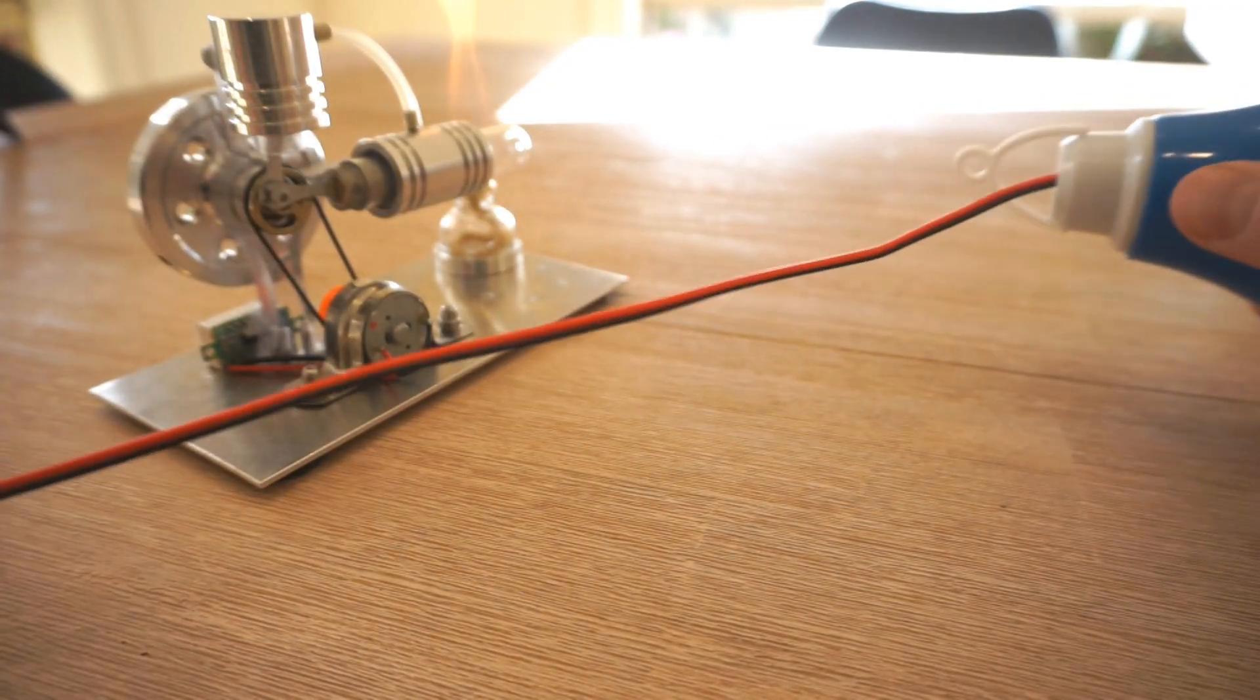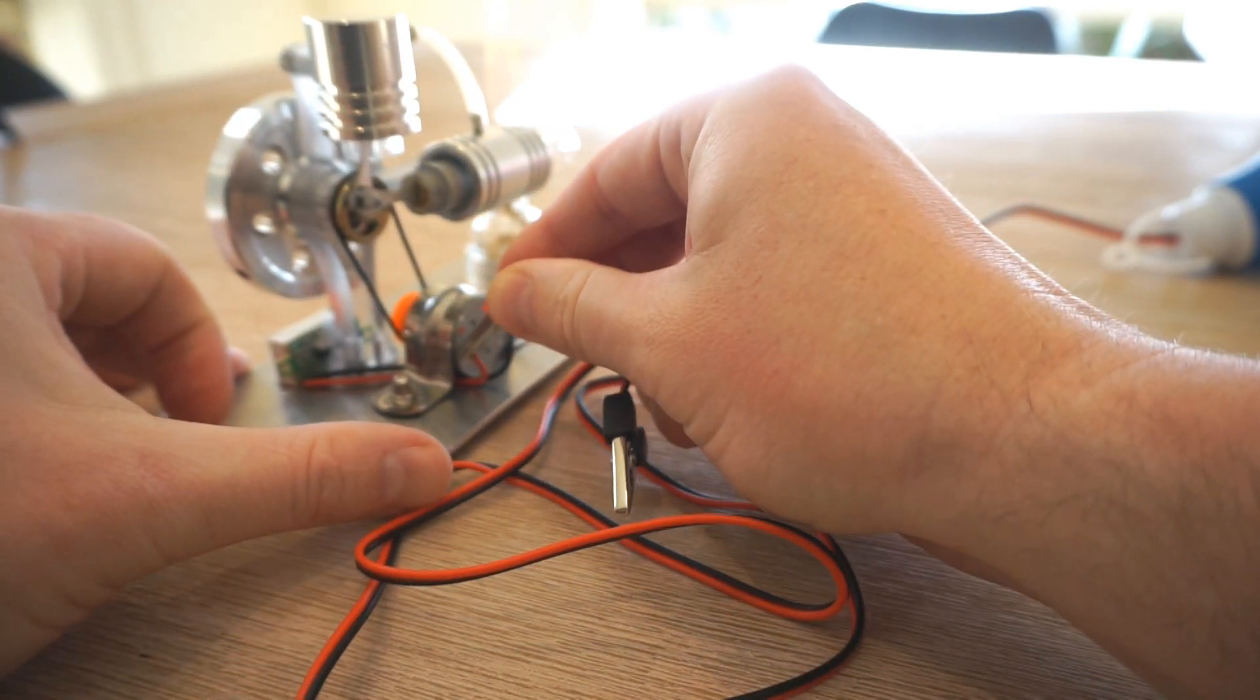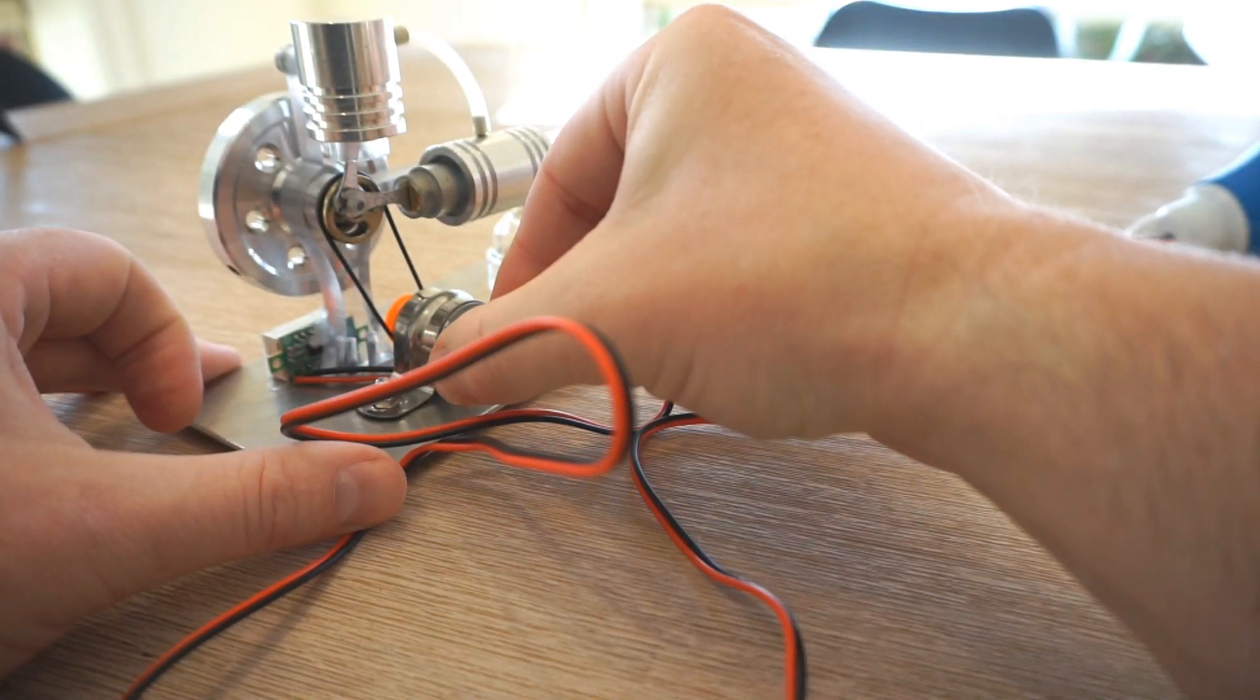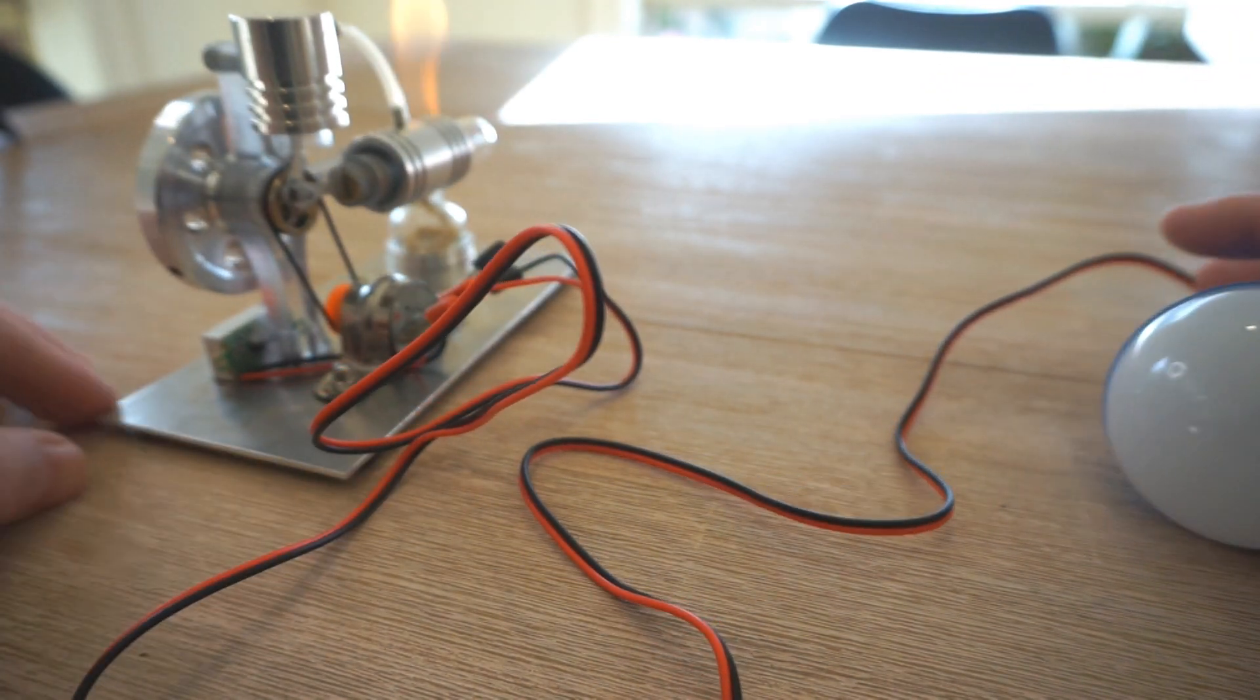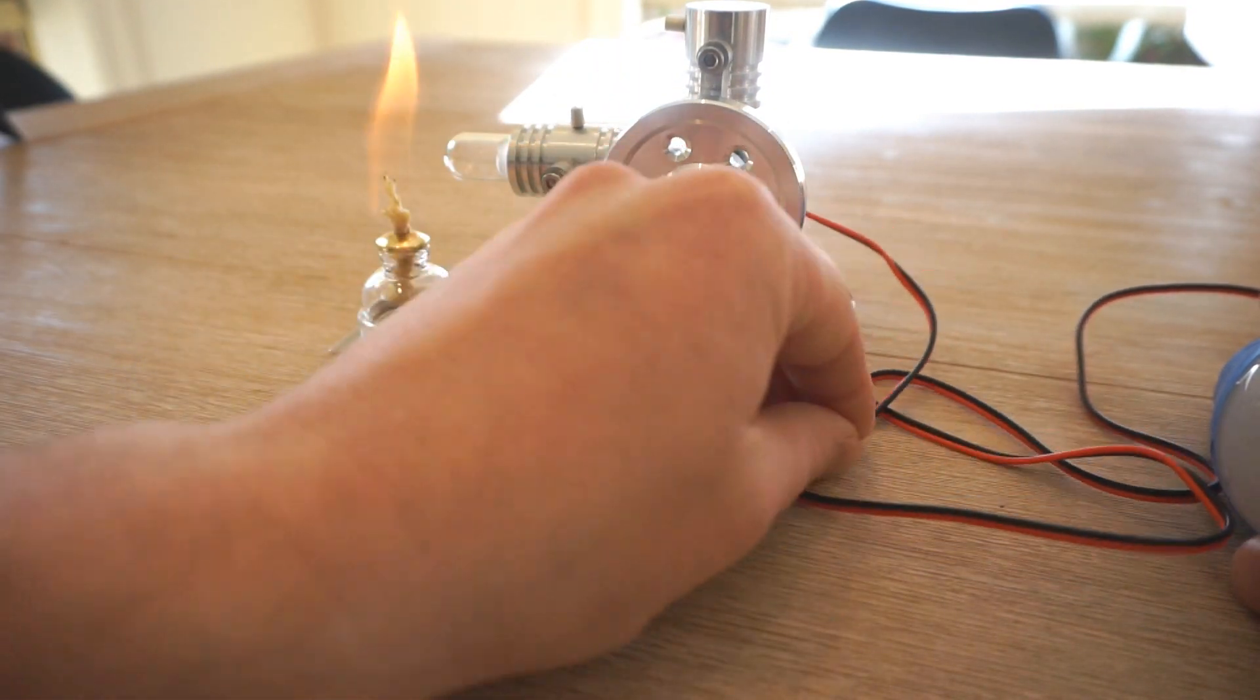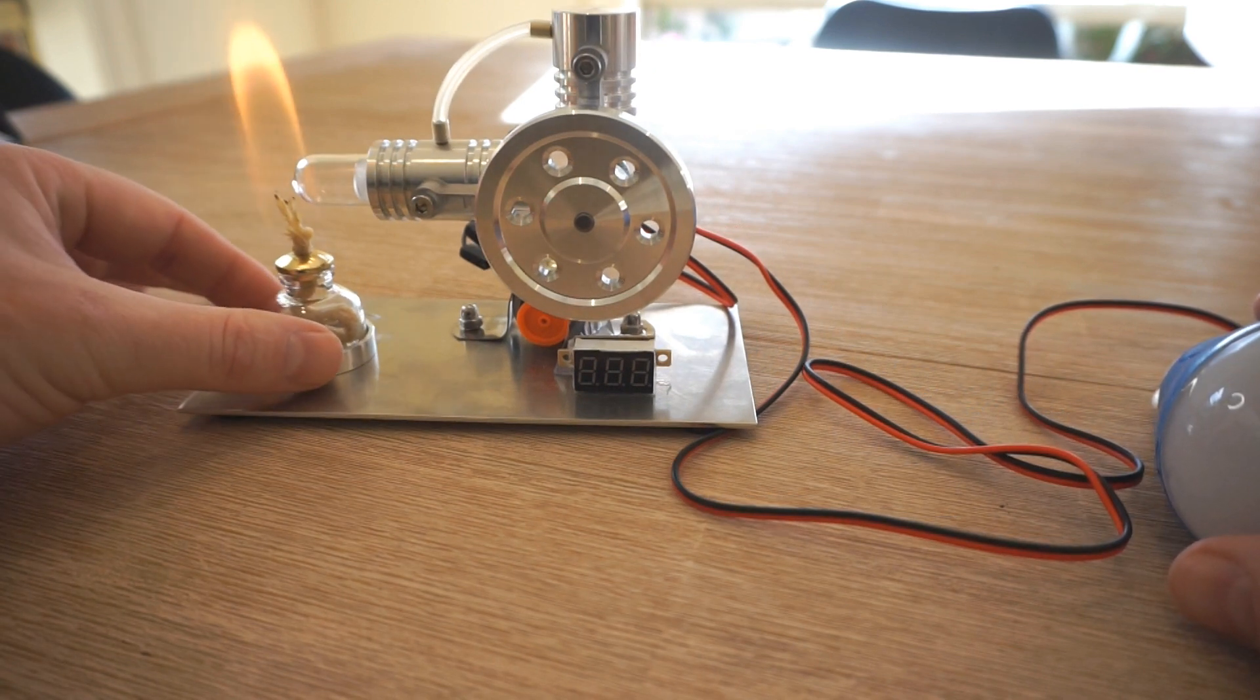Okay, so I've got my light bulb here with these alligator clips. Let's clip these on just onto the back of our generator here. Red to red, black to black. So now we've got a light bulb connected. Let's test. We did see that it was generating electricity because that screen was flickering, but maybe just not quite enough to show a solid number. So let's heat up our tube again.